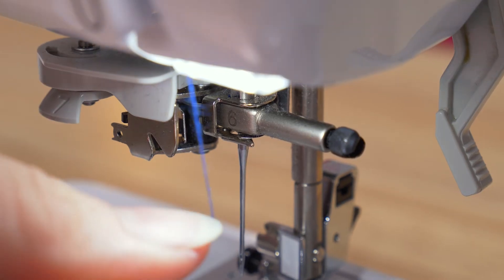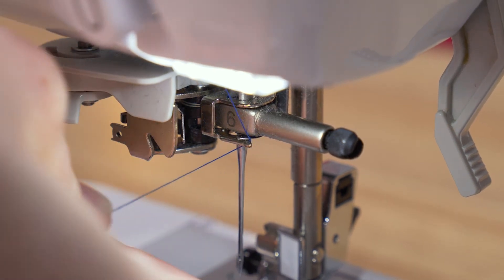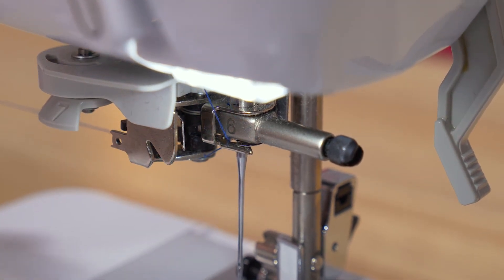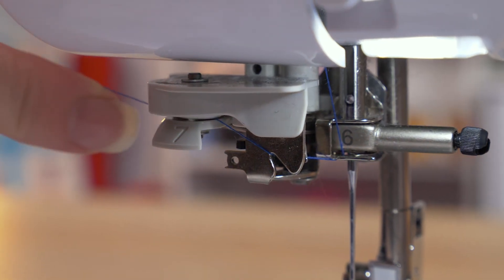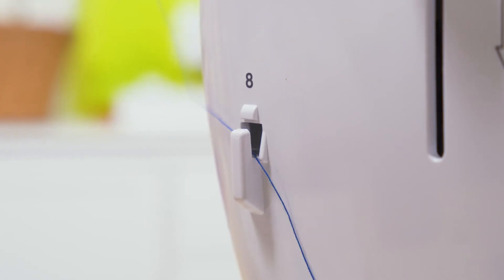At step six, make sure the thread goes past the metal gate and into the needle bar. Sometimes you'll need to hold the thread taut to do this. Then put your thread through the second gate at step seven and cut off the excess at step eight.